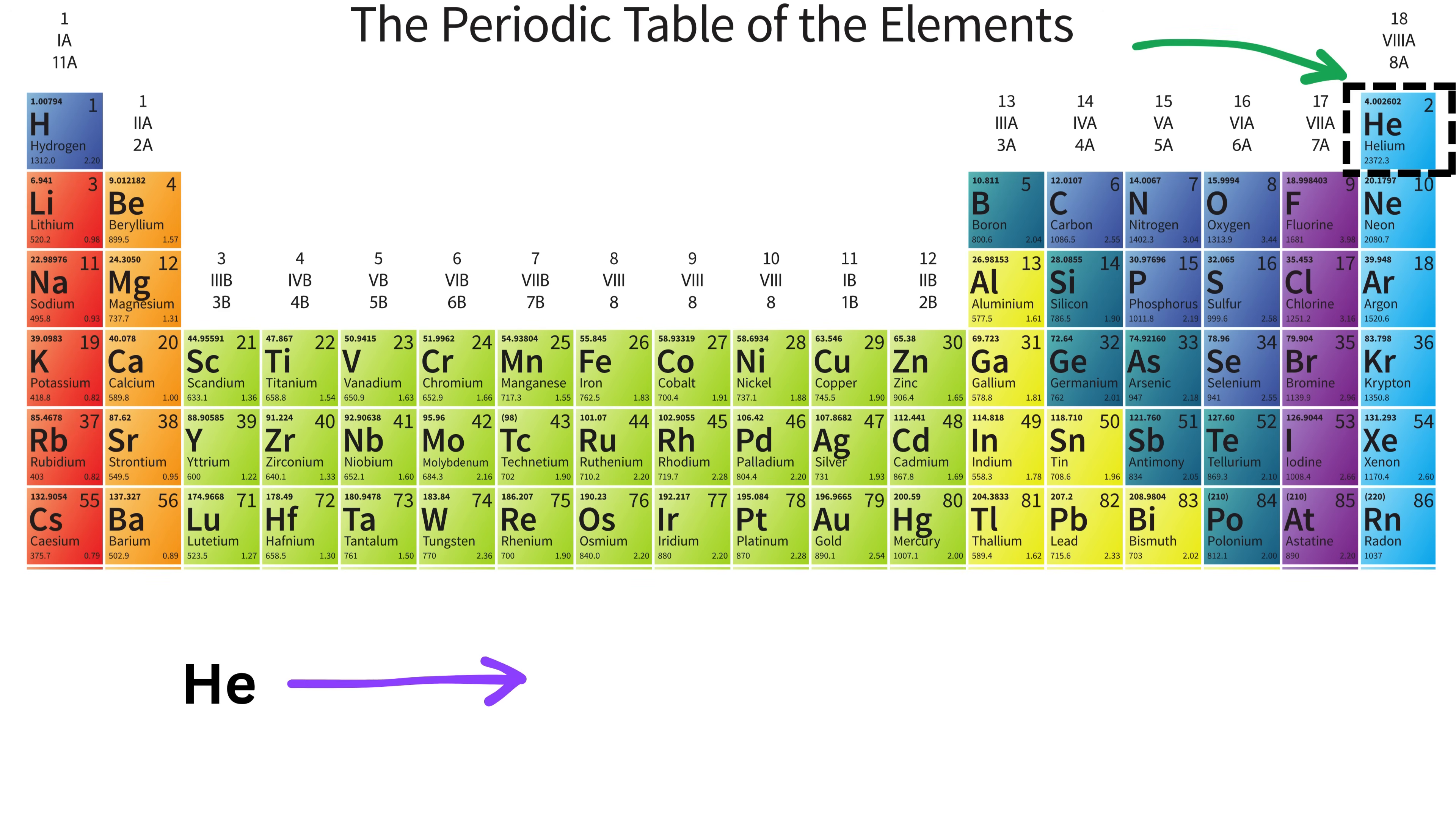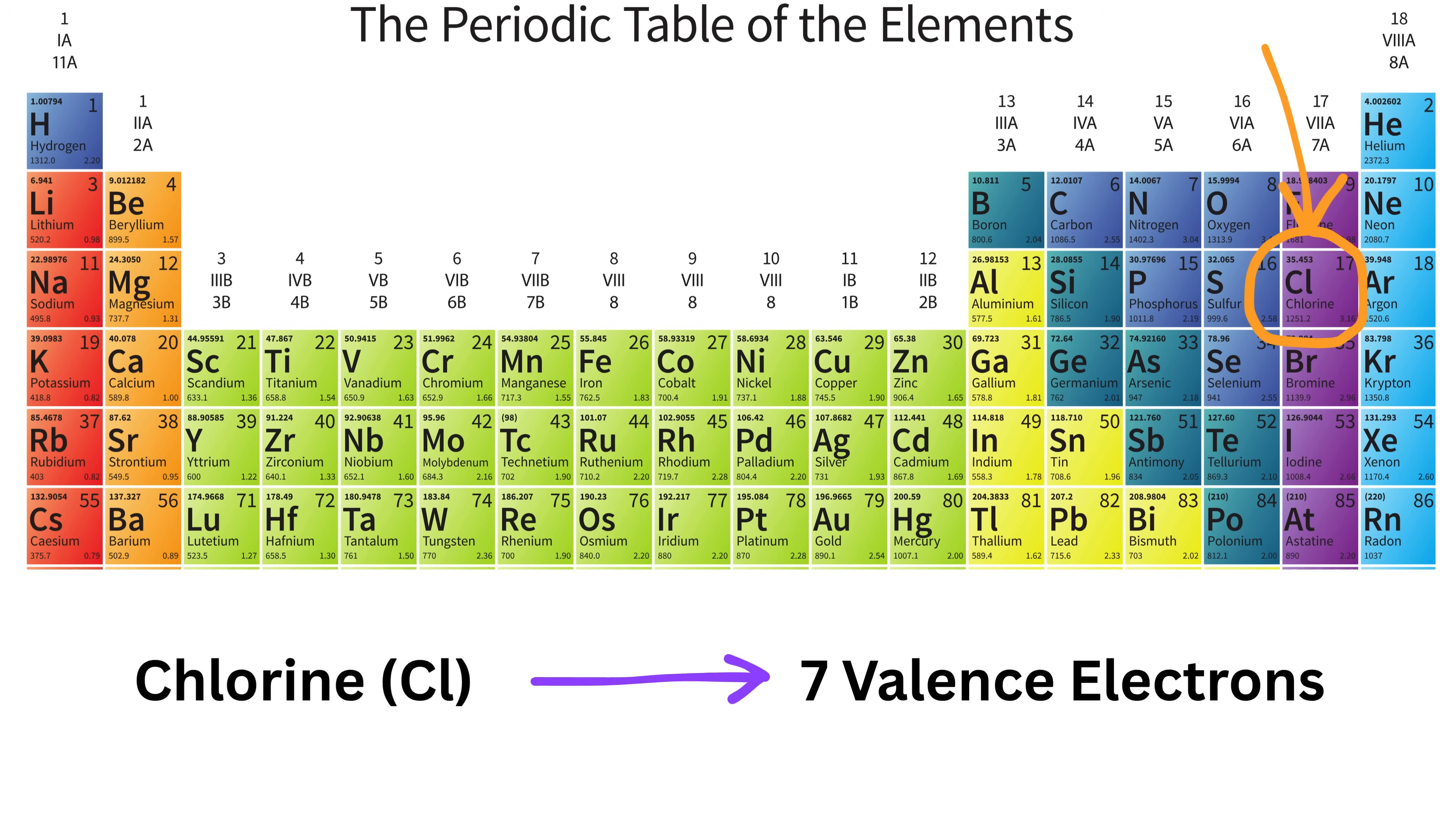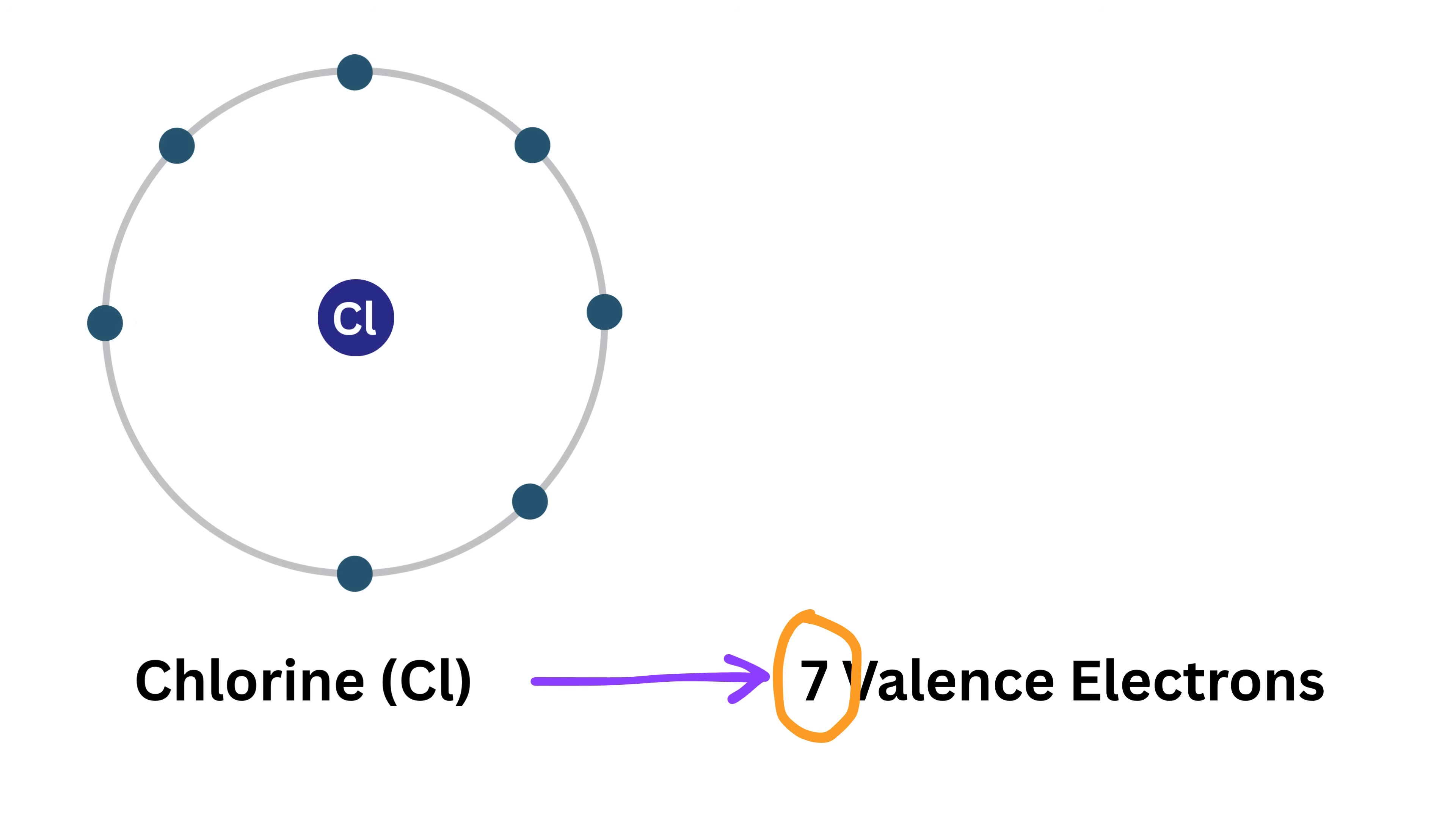The only special case is helium. Even though helium sits in group eight, it has only two valence electrons, not eight, because its outermost shell can hold only two electrons in total. So helium is already full and happy with two. Now let's take a specific example: suppose we pick chlorine. Find chlorine in the periodic table—its symbol is Cl, and it sits in group seven. That means chlorine has seven valence electrons. Perfect! This number, seven, is what we will represent in a Lewis diagram.